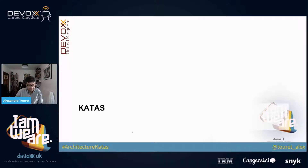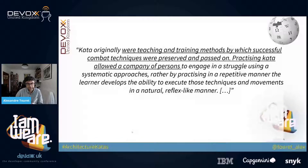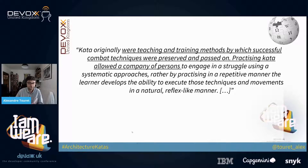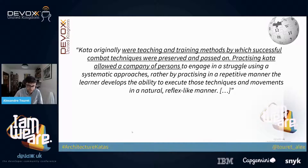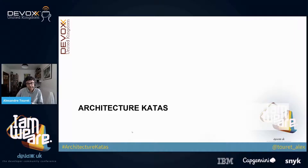Some people thought about that, and found the solution in martial arts. Martial arts has been promoting katas. What are katas? I'm not a martial arts expert, but according to Wikipedia, katas are a way of teaching and training practitioners through successful techniques that are preserved and passed on from one practitioner to another. These techniques allow persons to engage using systematic approaches, rather than reinventing the wheel. So here we are: architecture katas are just coding dojos for architects.